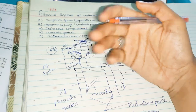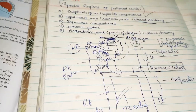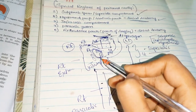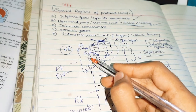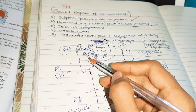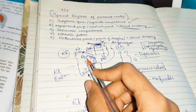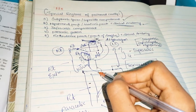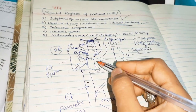Let us now see the boundaries. Anteriorly, it has the inferior surface of the right lobe of the liver, and also the gallbladder. Posteriorly, it has the right suprarenal gland and the upper part of the right kidney — these form its posterior boundaries. Also posteriorly: the second part of the duodenum, the hepatic flexure of the colon, the transverse mesocolon, and part of the head of the pancreas.